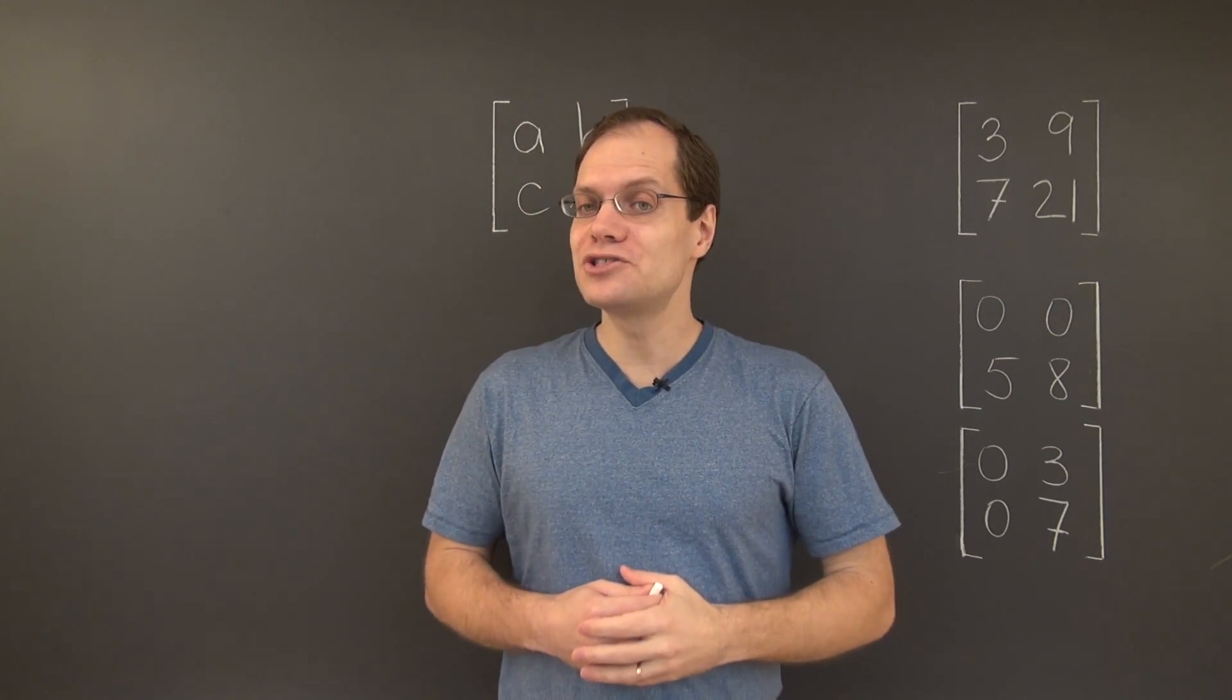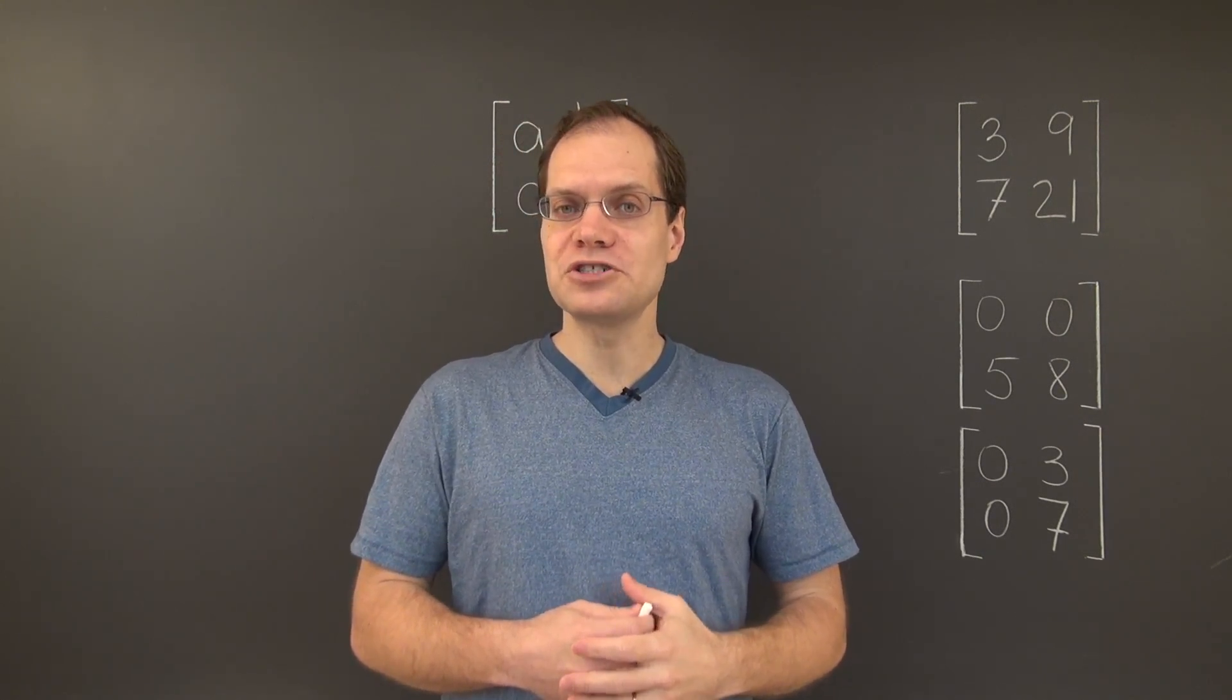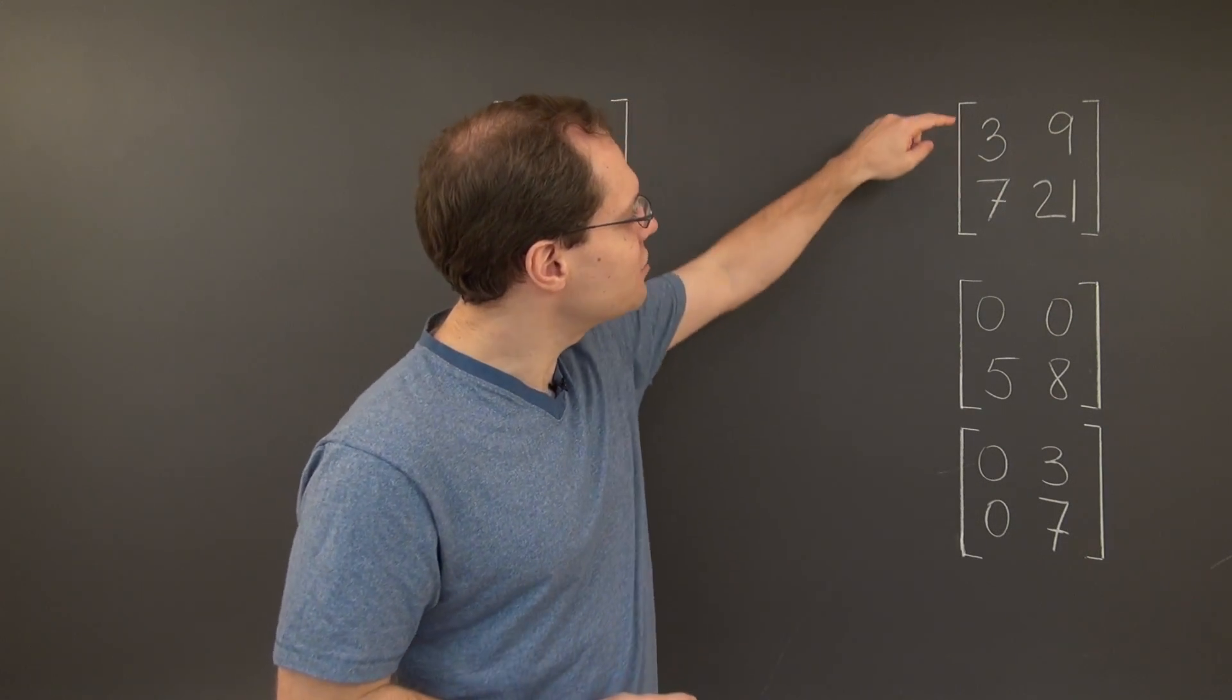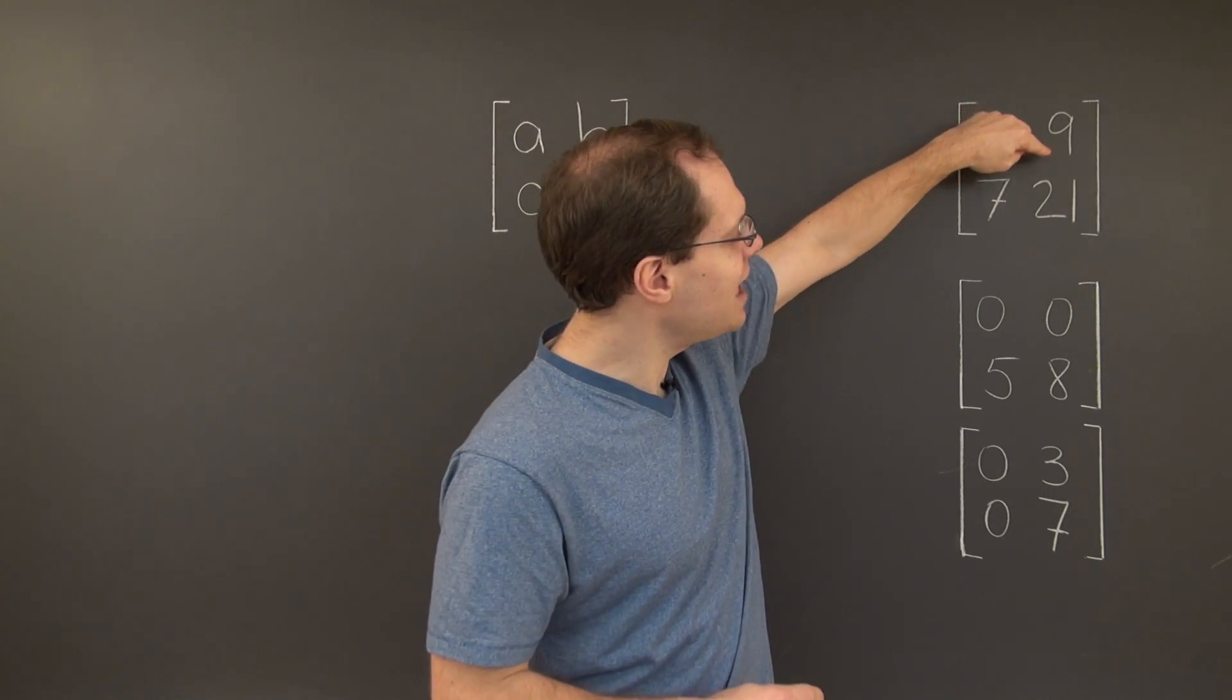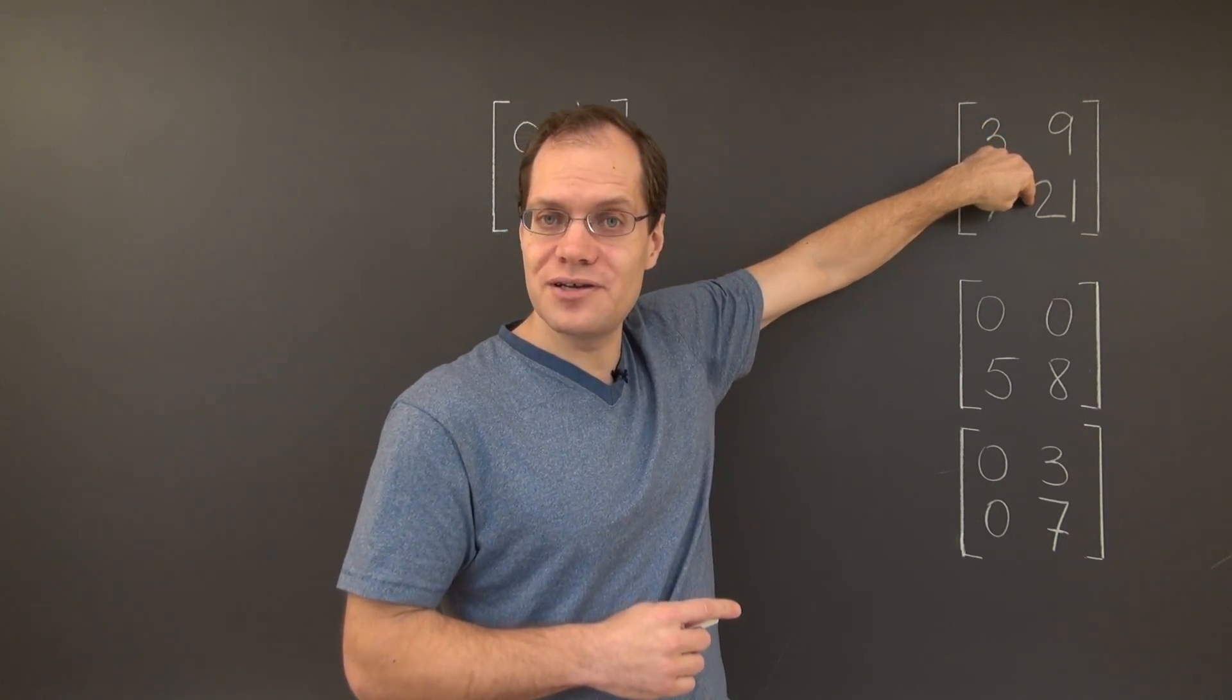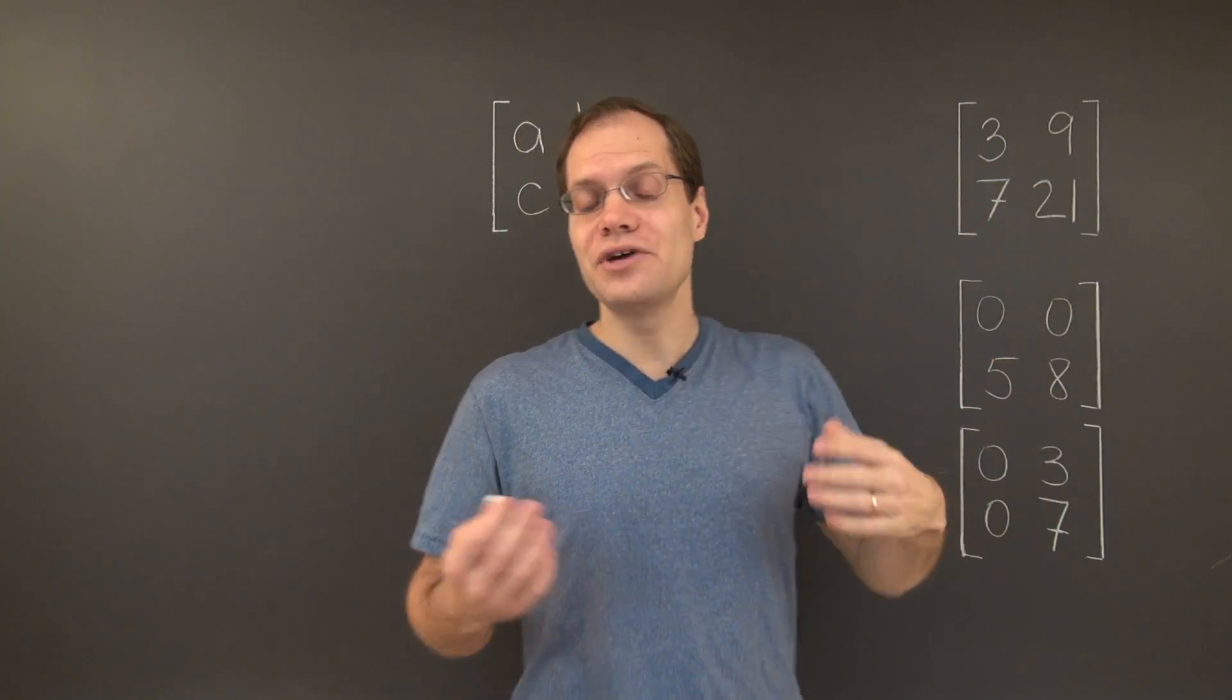Some people like to approach this question a little bit differently. They like looking for proportions within each column. And they would notice that 3 over 7 equals 9 over 21, because in 9 over 21 we can cancel a factor of 3, leaving us with 3 over 7. And so the ratios match.